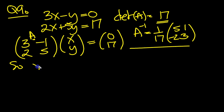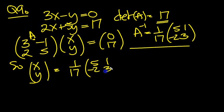So xy then will equal 1 over 17 times 5, 1, minus 2, 3, multiplied by 0, 17.